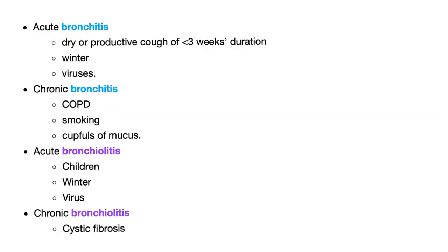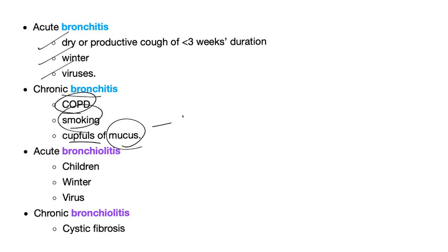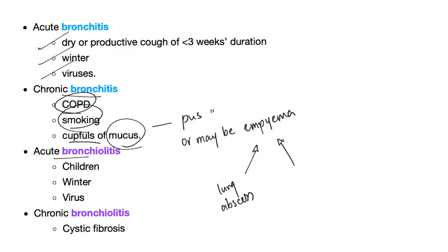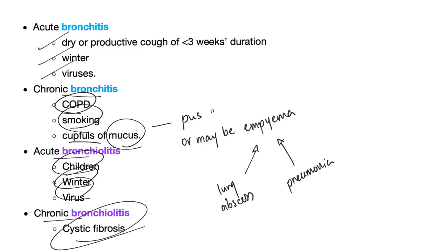Quick summary: acute bronchitis — dry or productive cough in winter, viral, especially in kids. Chronic bronchitis — COPD, smoking — cupfuls of mucus. But if the question says cupfuls of pus, think bronchiectasis. Acute bronchiolitis — children, winter virus. Chronic bronchiolitis — cystic fibrosis. And in cystic fibrosis, you will have cupfuls of pus.